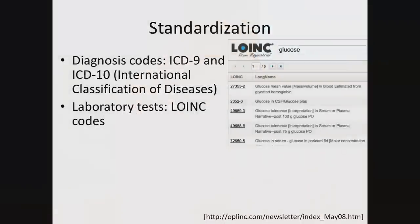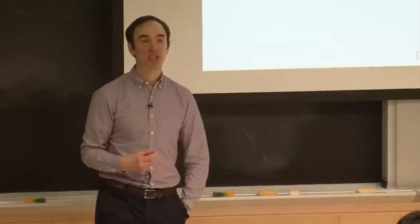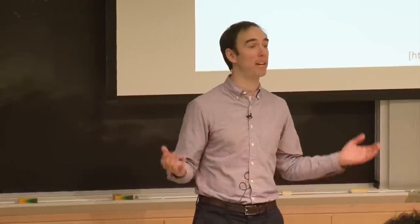Laboratory test results are standardized using LOINC here in the United States — every lab test order has an associated code. The values associated with those lab tests are less standardized. Pharmacy national drug codes — NDC — should be familiar: if you take any prescribed medication and look carefully, you'll see a number on it like NDC 0015347911, unique even to the brand of that medication. One can understand in a very structured way what medications the patient is on and how those medications relate to one another.